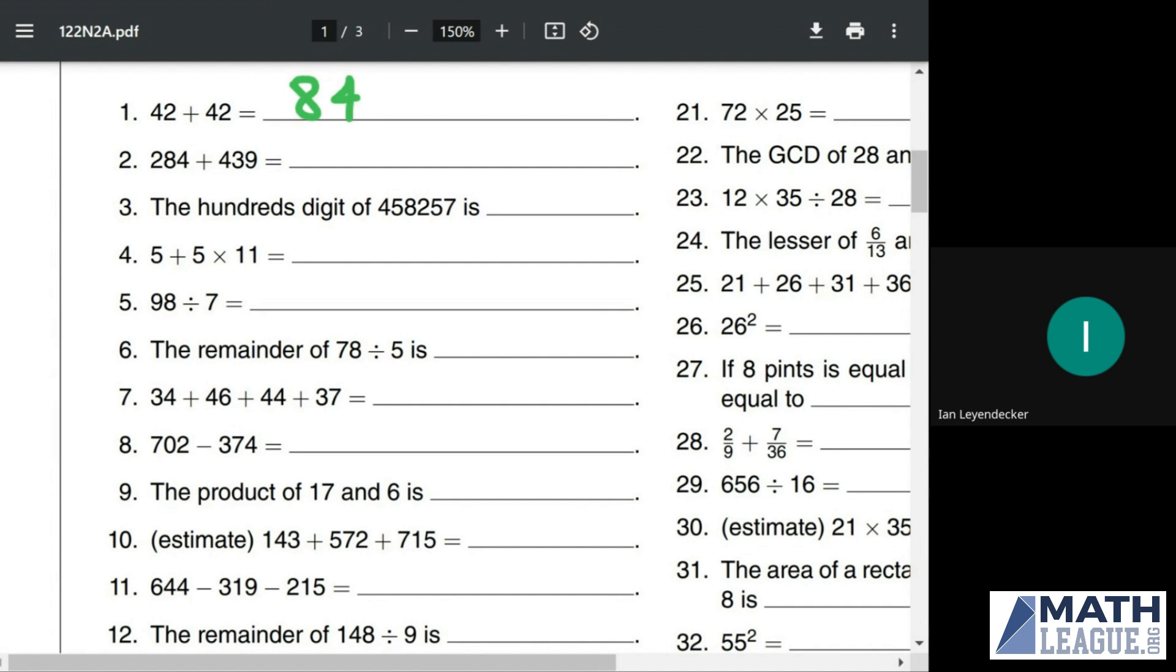284 plus 439. You can take away 16 from the 439 to turn this into 300, and this into 423 for a total of 723.